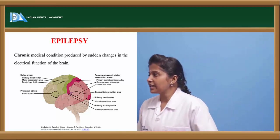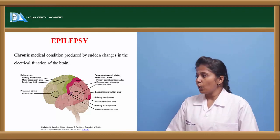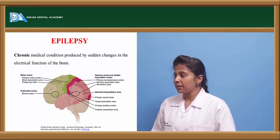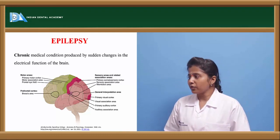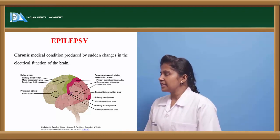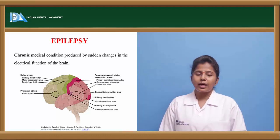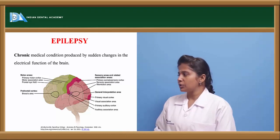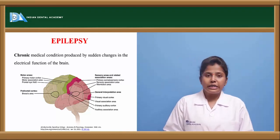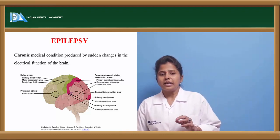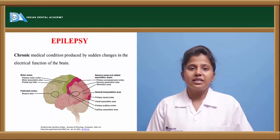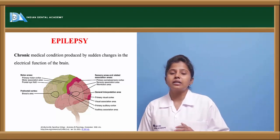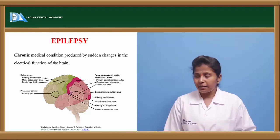There are various areas in the brain. One is the motor area, which controls body movement, and the prefrontal cortex. Another is the sensory area, where senses are monitored. There are also visual and auditory areas. Each activity in the brain is monitored through the generation of electrical impulses.